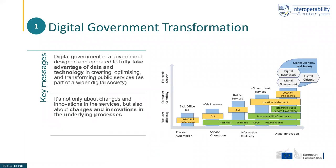We talked first about digital government transformation, showing that this transformation towards digital government can be considered in the wider context of the evolution toward a digital economy and digital society, of which digital government is just one element. It's not only about digital government — it's also about digital businesses and digital citizens, and there are strong links between these three, so it's important to consider them all together.